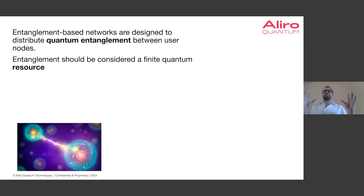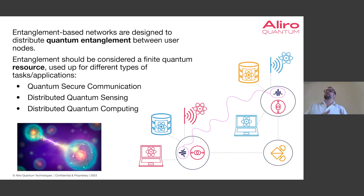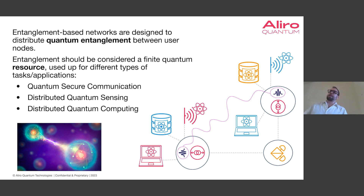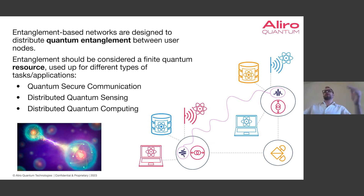Broadly, the areas of application we expect to use entanglement for include quantum secure communication, quantum sensing and distributed quantum sensing, as well as distributed quantum computing. This is because entanglement can also be used to teleport — i.e. transport — quantum states, i.e. qubits. Whatever it's going to be used for, what we'll be looking at in this talk is how we actually go about getting the entanglement to where it's supposed to go.